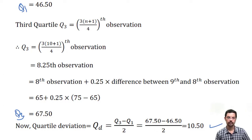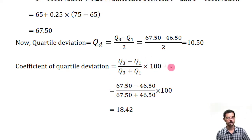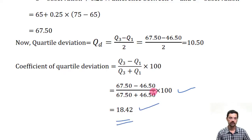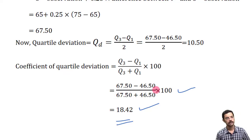Now, the coefficient of quartile deviation = (Q3 - Q1) / (Q3 + Q1) × 100. Putting in the values of Q3 and Q1, we get 18.42. In case of grouped distribution, you need to find Q1 and Q3 using the partition values method and then apply the same formula.